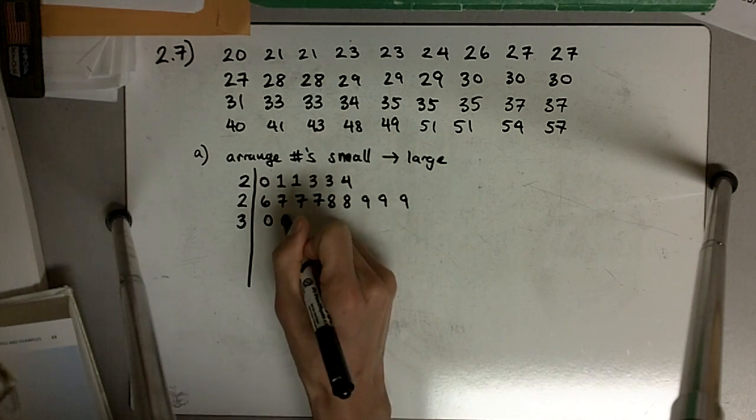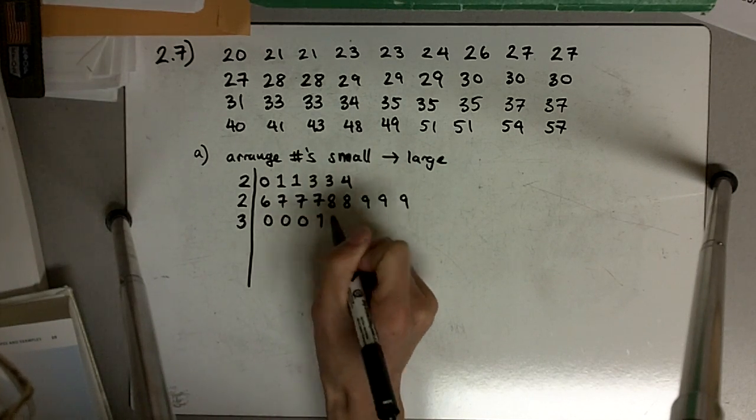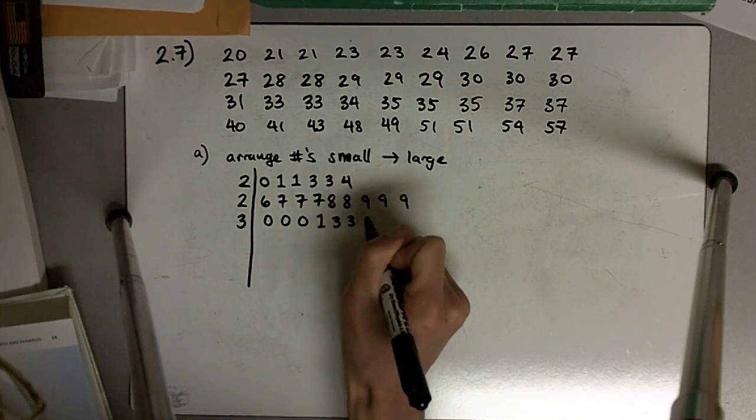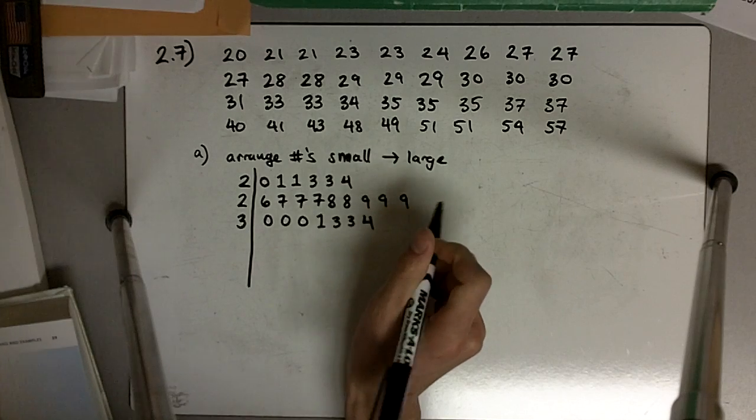And finally 30 creates a new stem: 30, 30, 30, 30, 30, 31, 33, 33, 34.